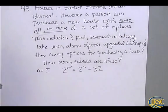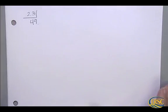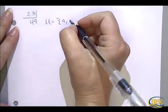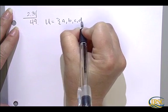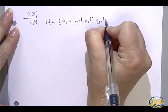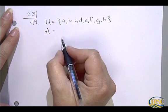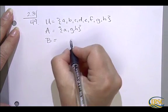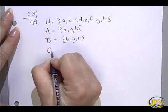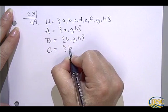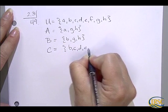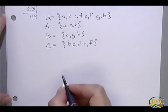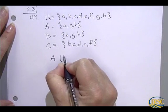From section 2.3, number 49. You're given that the universal set is the letters A, B, C, D, E, F, G, H. Set A is A, G, H. Set B is E, G, H, and set C is E, C, D, E, F. You are looking for A union C complement.